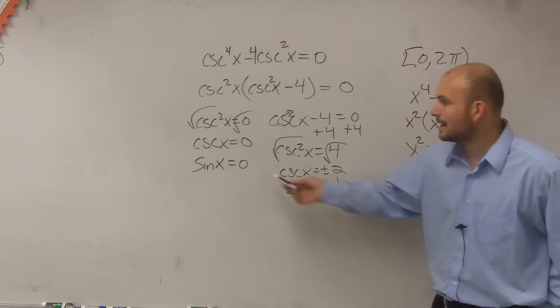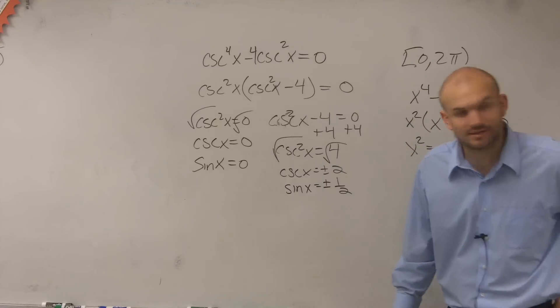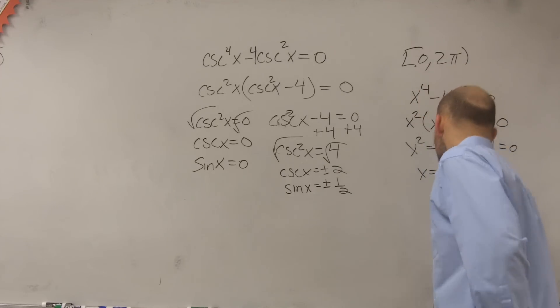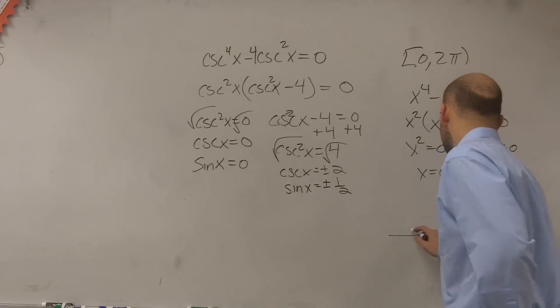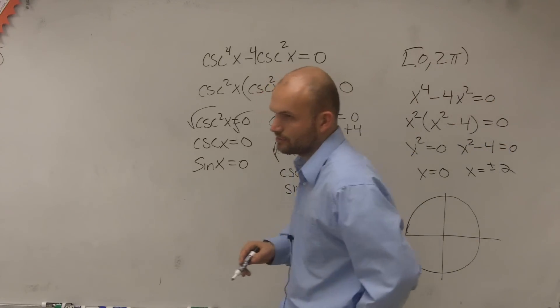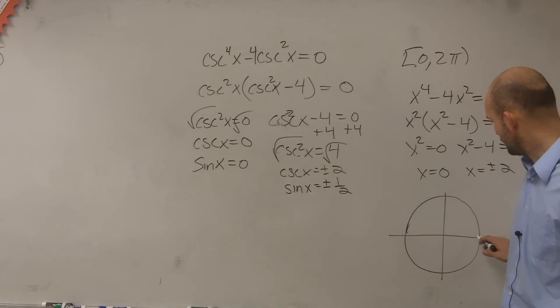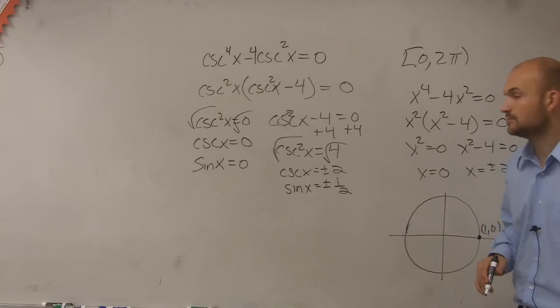So now I have all these values that sine equals. I need to find the theta that's going to make them true. So I create my unit circle. And I say, when is sine equal to 0? Well, at this point, we have a point 1 comma 0. That's where sine is equal to 0. And then when is sine of x, what angle when I take the sine of it is going to equal plus or minus 1 half?